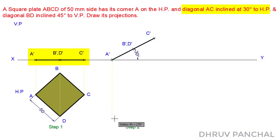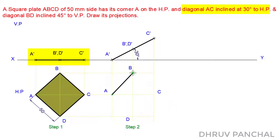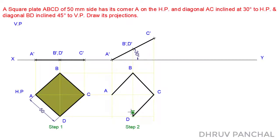To draw the top view in Step 2, with the help of a roller scale, take the projections of each point of the top view of Step 1 in the right direction, and locate points A, B, C, and D. Then, with the help of a roller scale, draw a line passing through each corner point as shown.